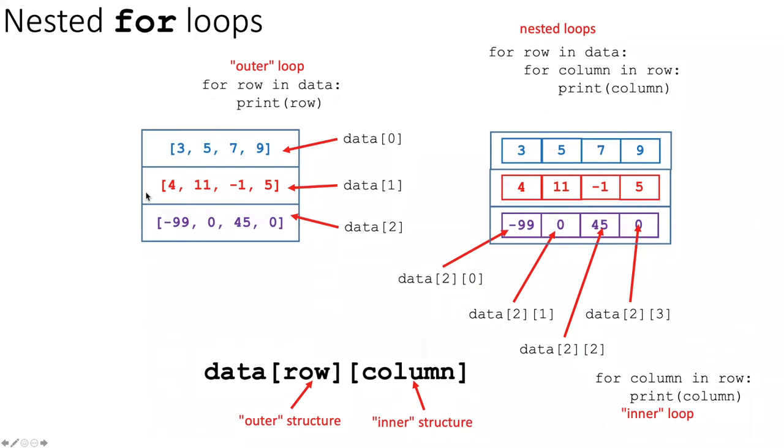So in this case, the data structure is called data, and I'm calling each of the iterable items a row. So if I do the loop for row in data, it's going to step through and first do the first row, then the second row, which is numbered one, then the third row, which is number two.